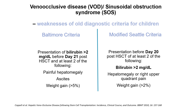For the diagnosis of VOD using modified Seattle criteria, you needed a presentation before day 20 post-transplant of at least two of the following: bilirubin above 2, or hepatomegaly, or right upper quadrant pain, or weight gain more than 2%. In the Baltimore criteria, hyperbilirubinemia was essential and obligatory; in the modified Seattle criteria it was not, but bilirubin was still an important symptom for the diagnosis of VOD.